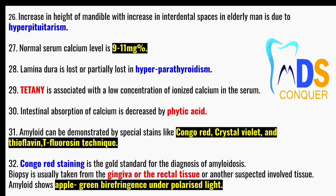Point number thirty: intestinal absorption of calcium is decreased by phytic acid. Point number thirty-one: amyloid can be demonstrated by special stains like Congo red, crystal violet, and thioflavin T fluorescent technique. Point number thirty-two: Congo red staining is the gold standard for the diagnosis of amyloidosis. Biopsy is usually taken from the gingiva, rectal tissue, or any other suspected involved tissue. Amyloid shows apple-green birefringence under polarized light.